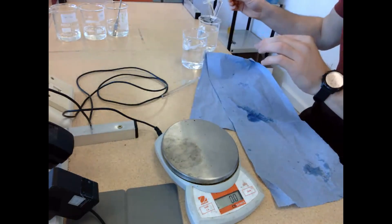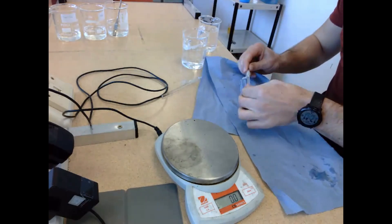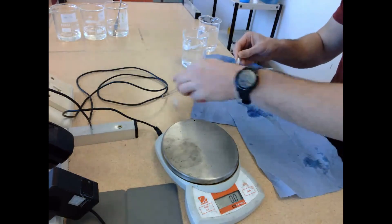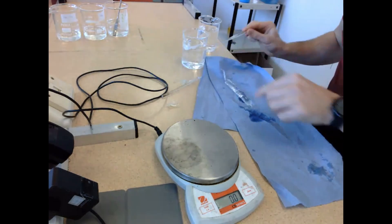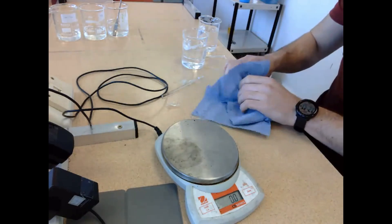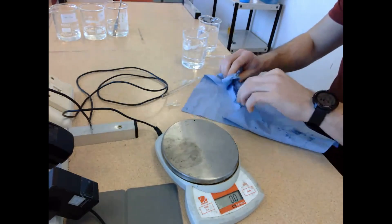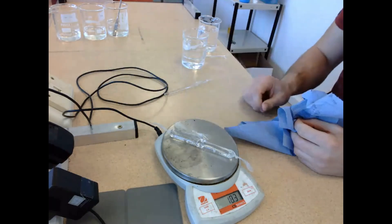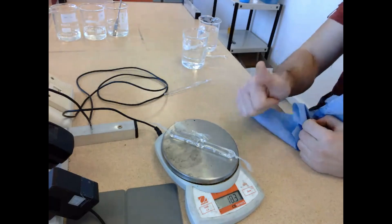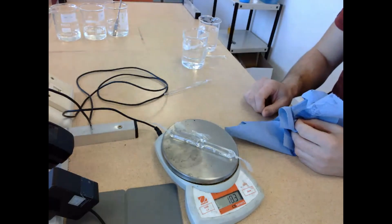Same thing with visking tubing B - remove the glass rod, get rid of the sellotape, and put it on the balance. It's going to come back at an increased mass of 18.3 grams. Therefore, I can state that osmosis has occurred, as water has moved into the visking tubing to try and balance out the two concentrations.